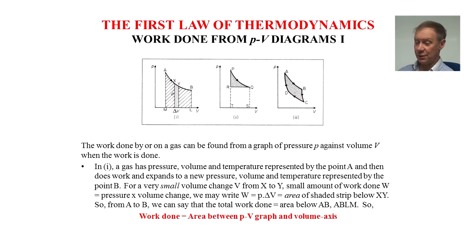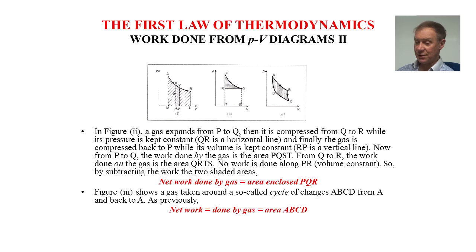In the center diagram, figure 2, the gas expands from P to Q, then it is compressed from Q to R while the pressure is kept constant. QR is a horizontal line. Finally the gas is compressed to P while its volume is kept constant. RP is a vertical line. From P to Q, the work done by the gas is the area PQST. From Q to R, the work done by the gas is the area QRTS.